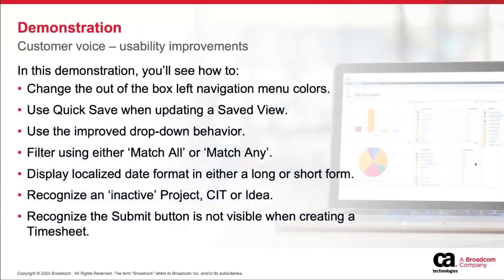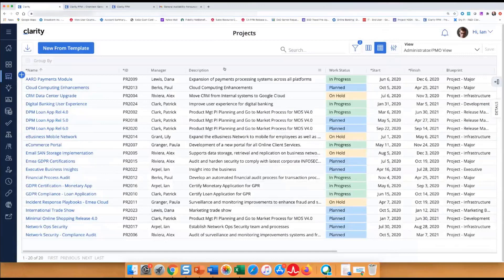So the next thing I'm going to do is move on to the demonstration. We're going to cover the colors, the quick save, the improved drop-down behavior, the AND/OR filtering capabilities, the date formatting updates, the inactive tag being applied, and the updates to the create timesheet page. Let me end the slide show. I've logged in and landed on our projects list. The first thing I want to demonstrate is this collection of usability improvements, starting with changing the out-of-the-box menu colors. This is behind administration on the left-hand navigation under system settings.